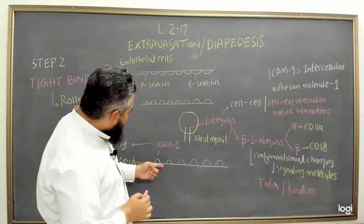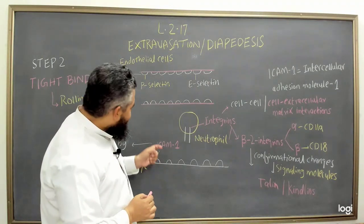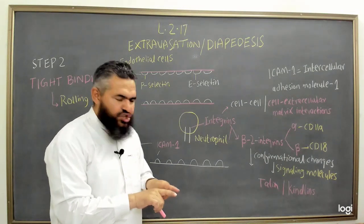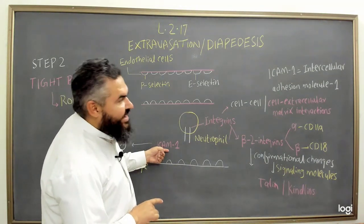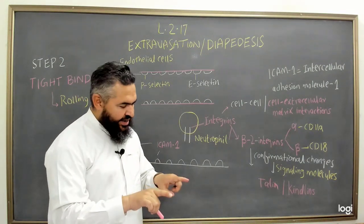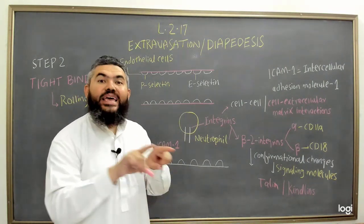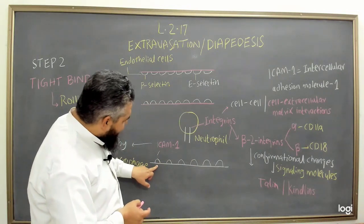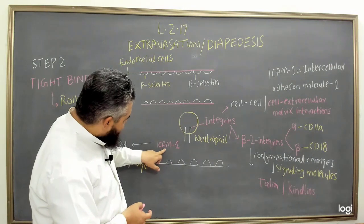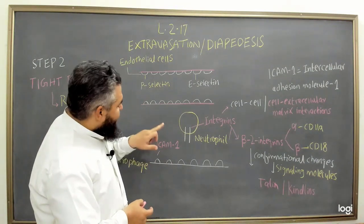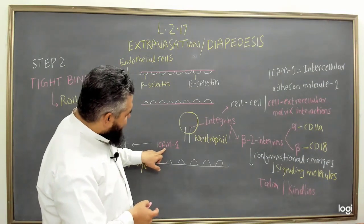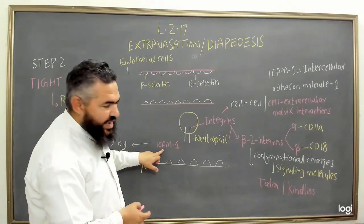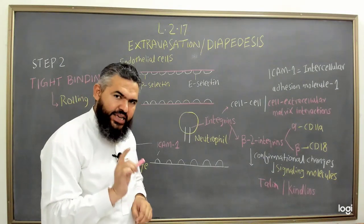ICAM-1 stands for Intercellular Adhesion Molecule 1. It is called intercellular because one cell is the endothelial cell and the other is the immune cell like the neutrophil — two cells interacting with each other. So ICAM-1 is responsible for adhesion between cells. After expressing P-selectin and E-selectin, the activated endothelial cells also express this ICAM-1. There must be something on the neutrophils that can interact with ICAM-1 to achieve the tight attachment.